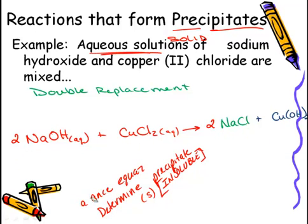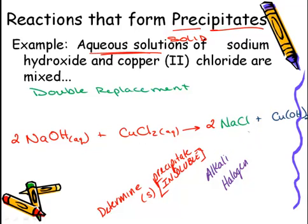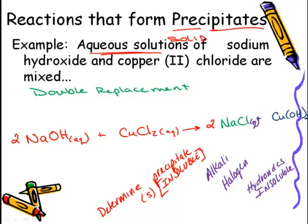Now we determine the state of each product. Our first two reactants are soluble. NaCl: sodium is an alkali metal and chlorine is a halogen — both are soluble, so NaCl is aqueous. Copper 2 hydroxide: hydroxides are insoluble with exceptions for alkali metals, ammonium, calcium, strontium, and barium. Since copper doesn't fit any of those exceptions, copper 2 hydroxide is our solid — our precipitate.